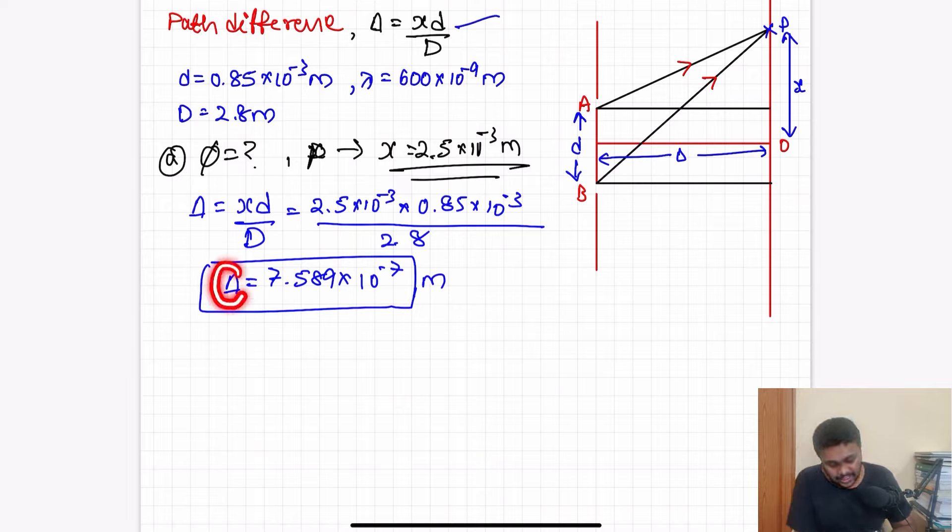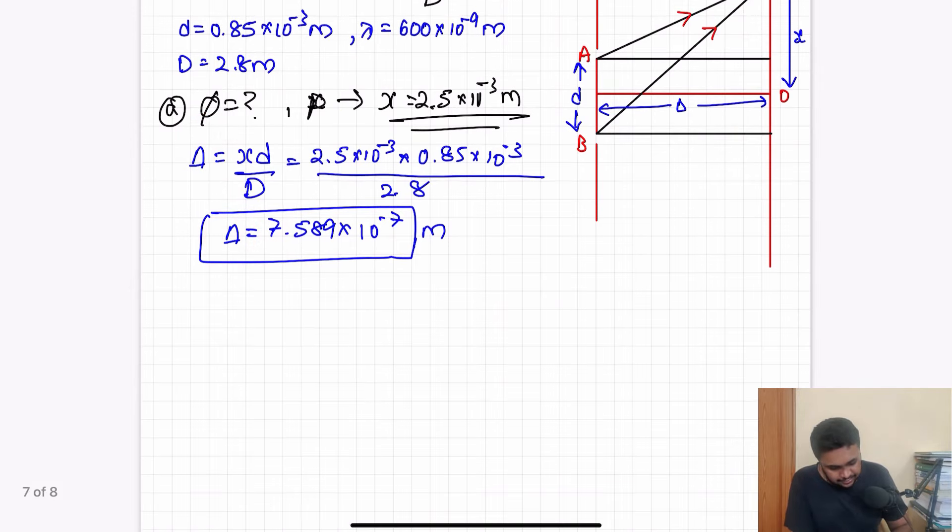The path difference that I get is 7.589 into 10 power minus 7 meter. So now the path difference, the unit is meter.